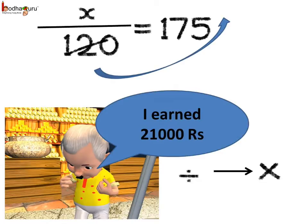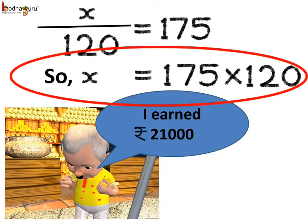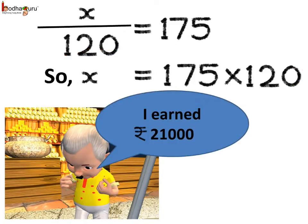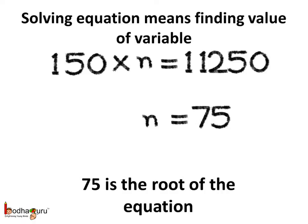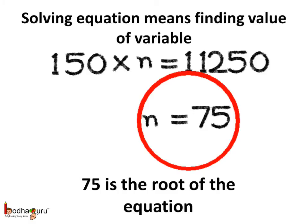When we remove the divisor 120, it appears on the other side with the opposite role — that is, divisor changes to multiplier. Divide by 120 on one side of the equation is changed to multiplied by 120 on the other side. So, we get x is equal to 175 multiplied by 120, which means Jagan earned Rs. 21,000. To solve the equation means finding the value of the variable. This value of the variable is called the root of the equation. Hence, here we can say 75 is the root of the equation.